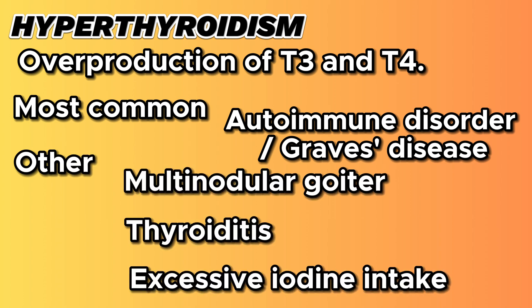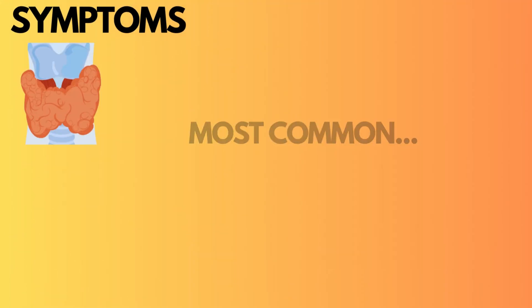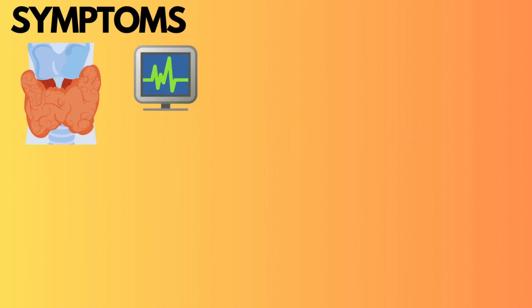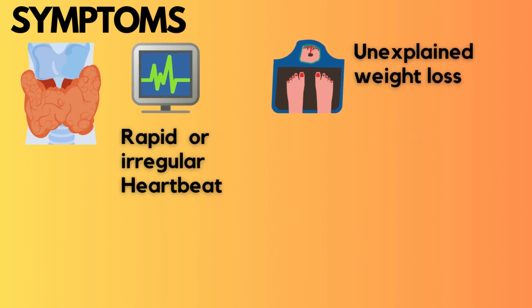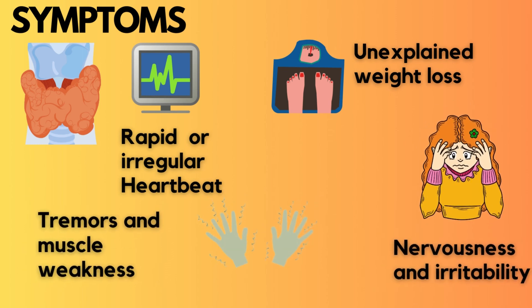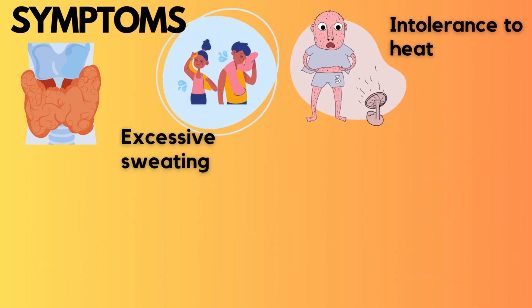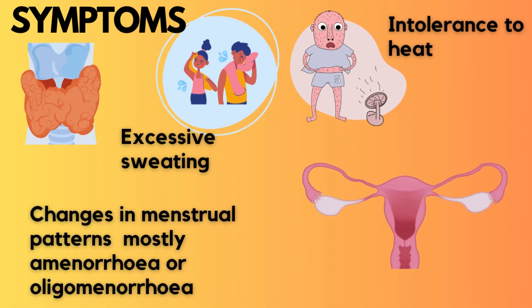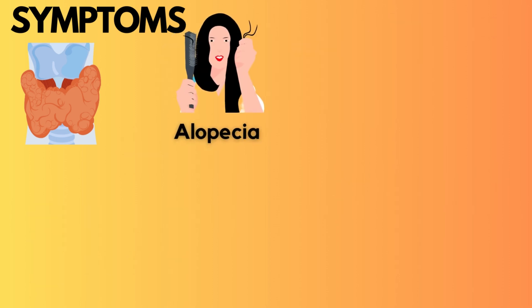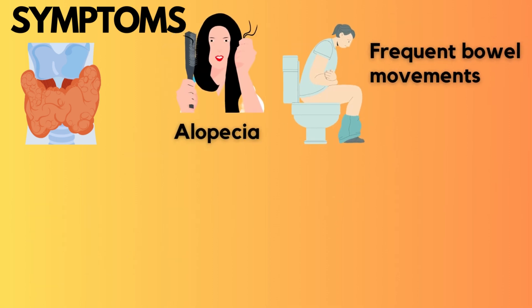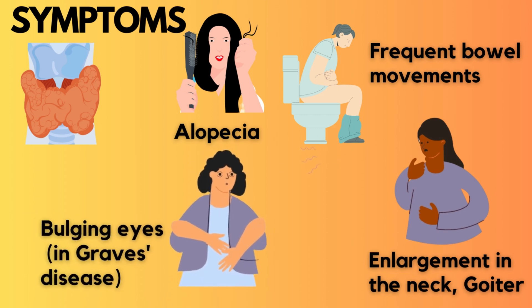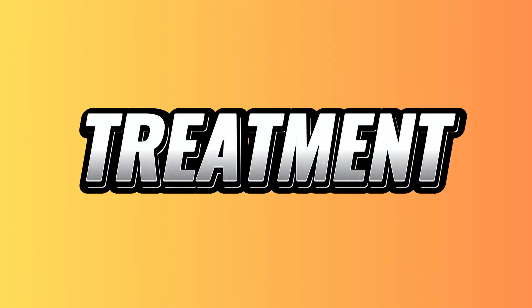Hyperthyroidism comes with a range of distressing symptoms. Common ones include rapid or irregular heartbeat, unexplained weight loss despite normal or increased appetite, nervousness and irritability, tremors and muscle weakness, excessive sweating, intolerance to heat, changes in menstrual patterns such as amenorrhea or oligomenorrhea, alopecia, frequent bowel movements, an enlargement in the neck called a goiter, and bulging eyes in Graves' disease.